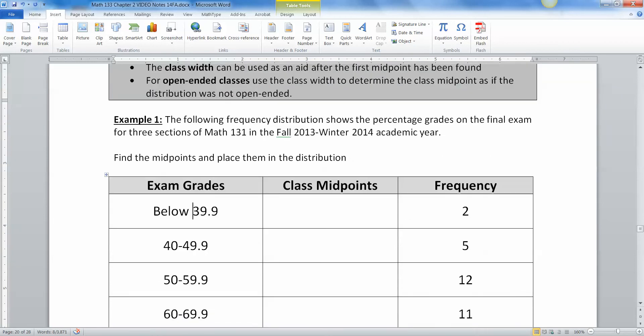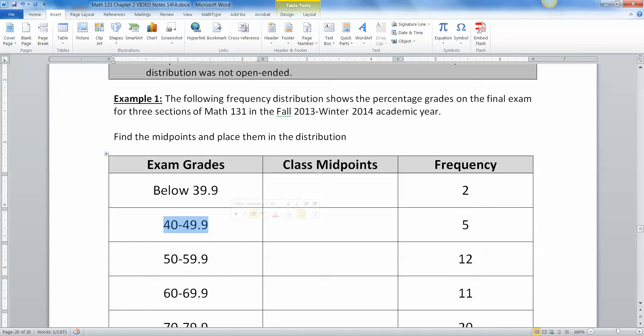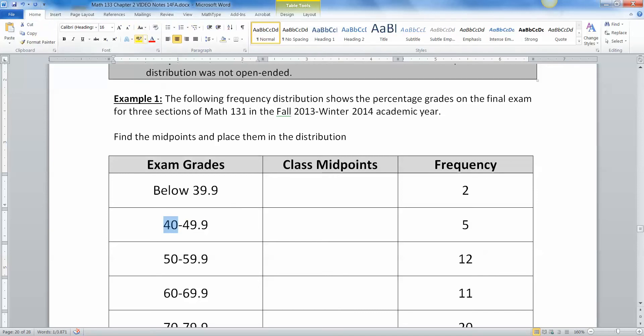Now the first class isn't any use to us down here because it's open-ended. So let's look at this class right here. So remember that this high number over here is really 49.9999999 forever, right? So you can't type that into a calculator or anything. So what you're going to do is you're going to take consecutive lower class limits. You're going to take 40 and 50, and you're going to add them up, and you're going to divide by 2.